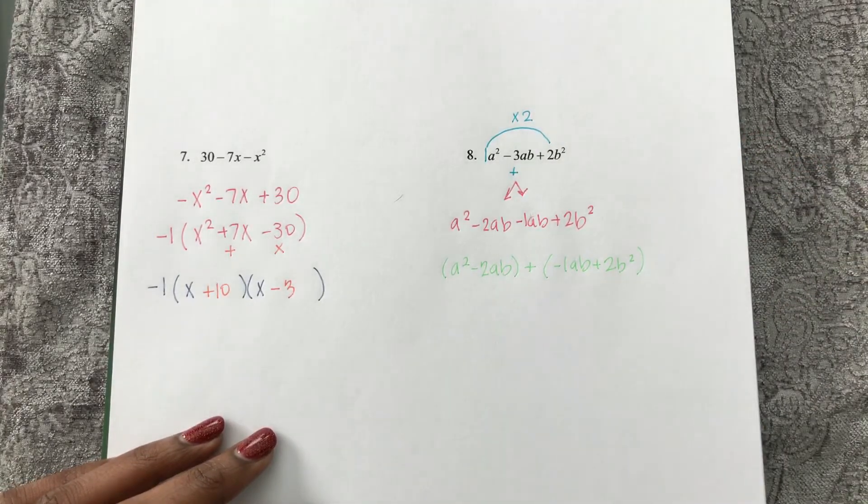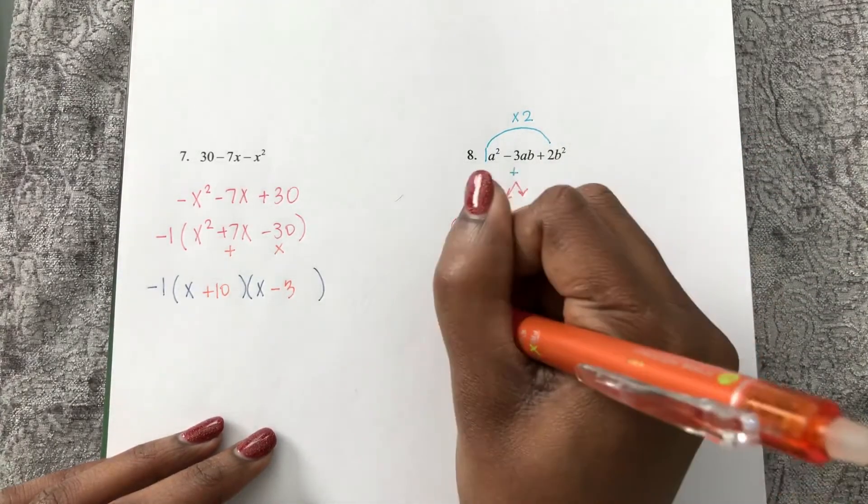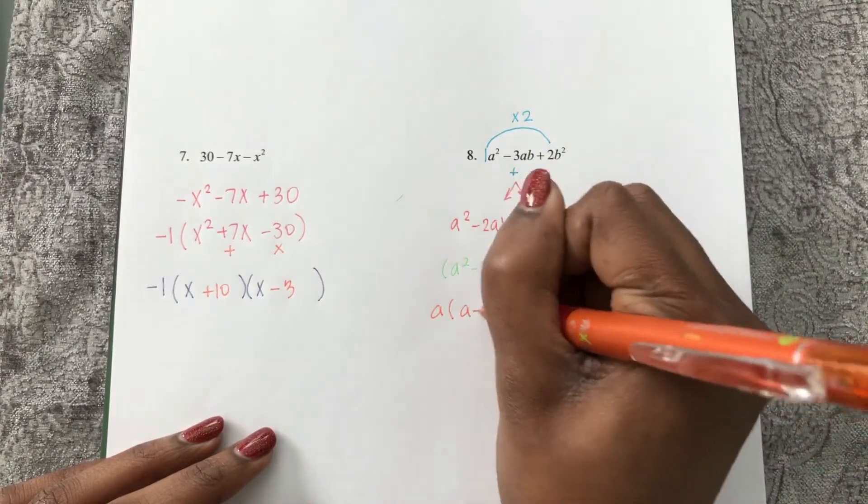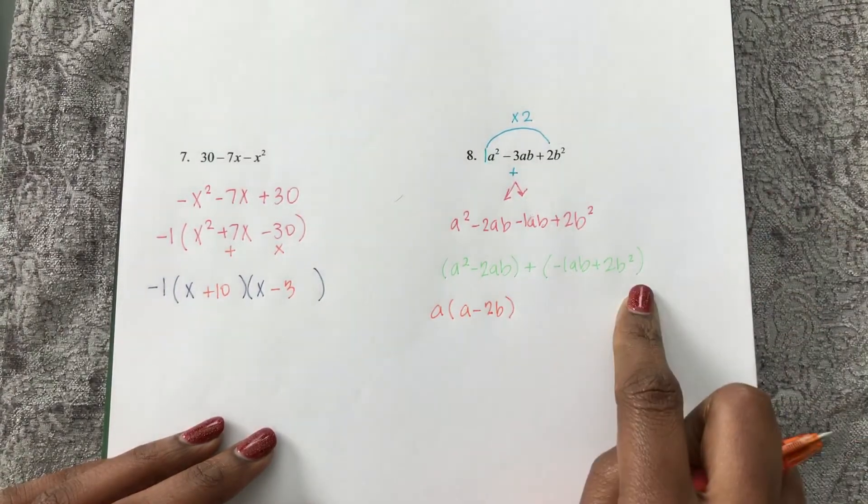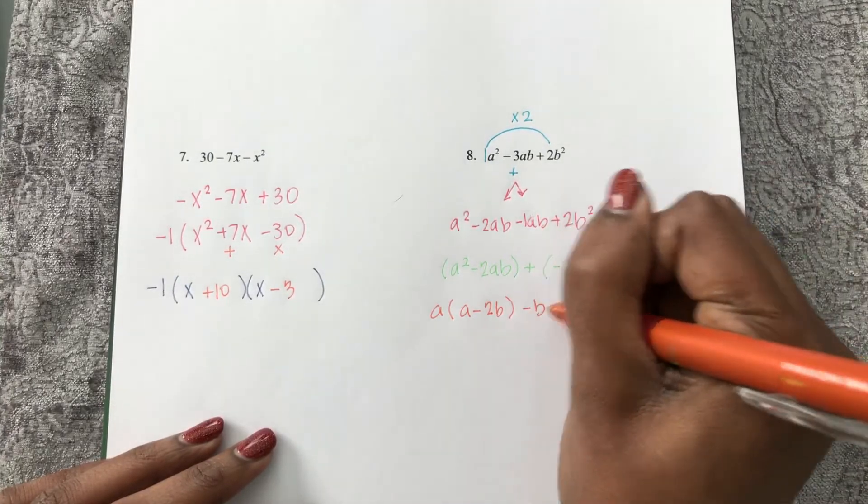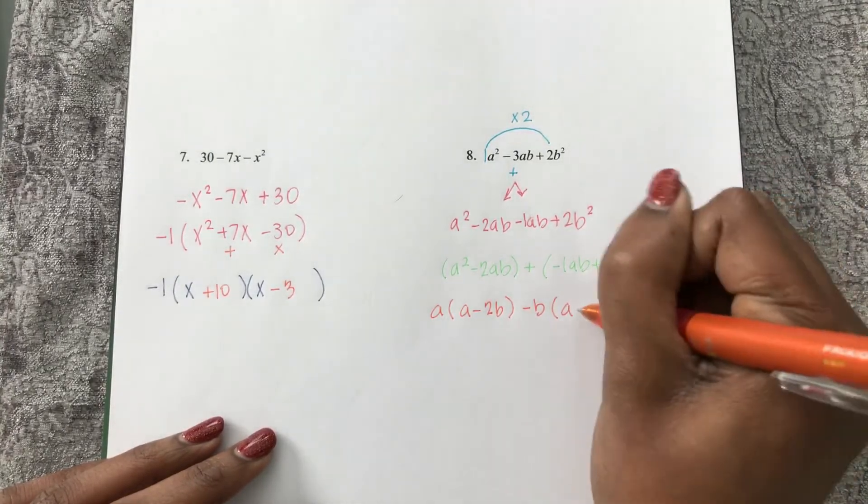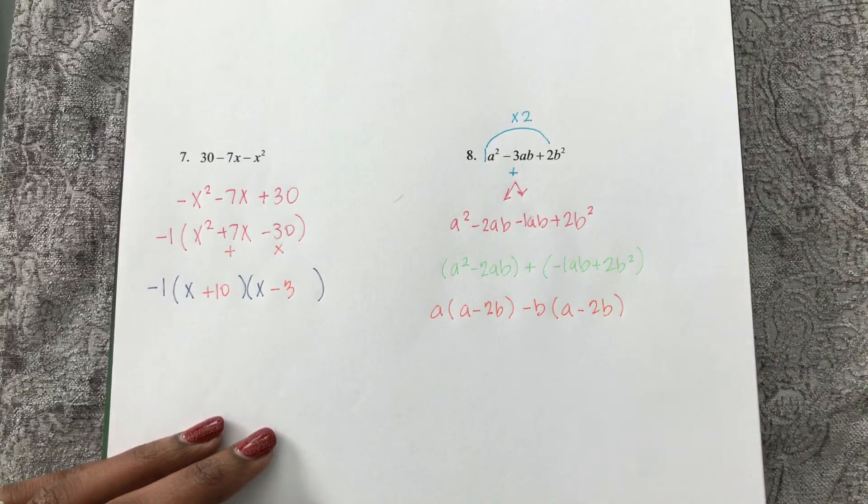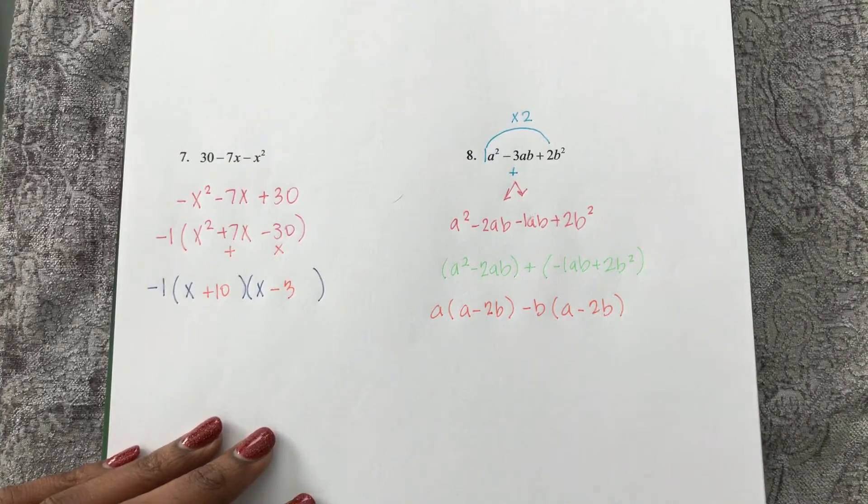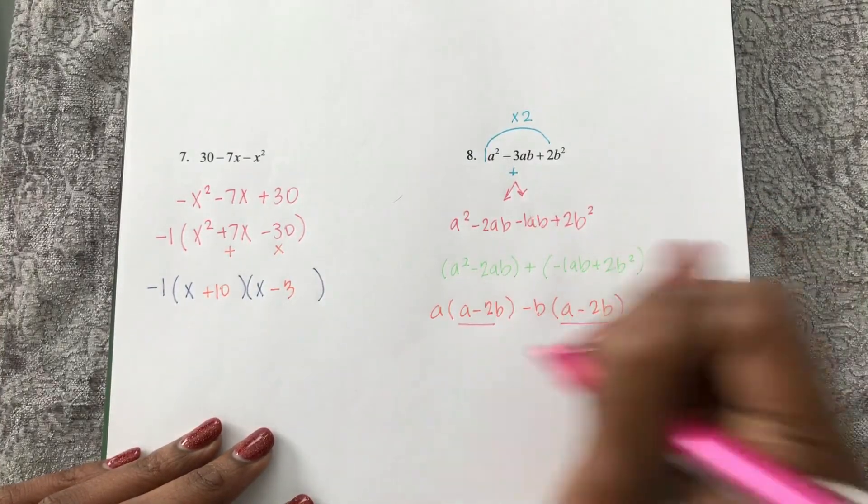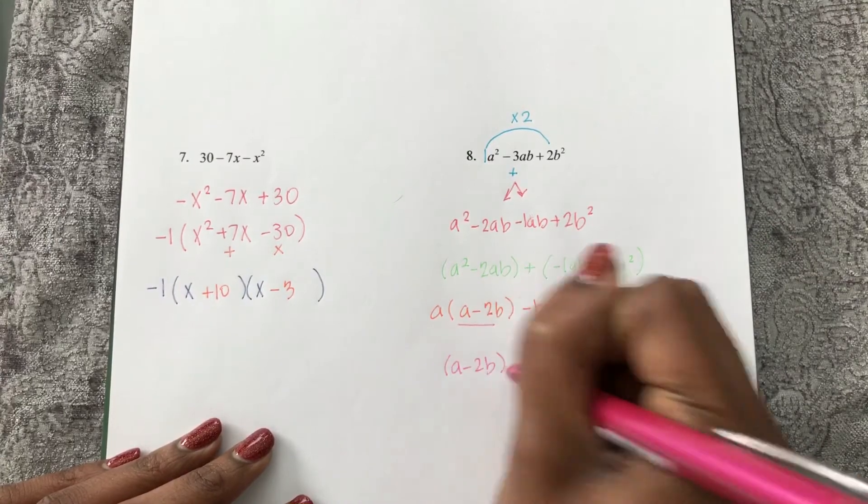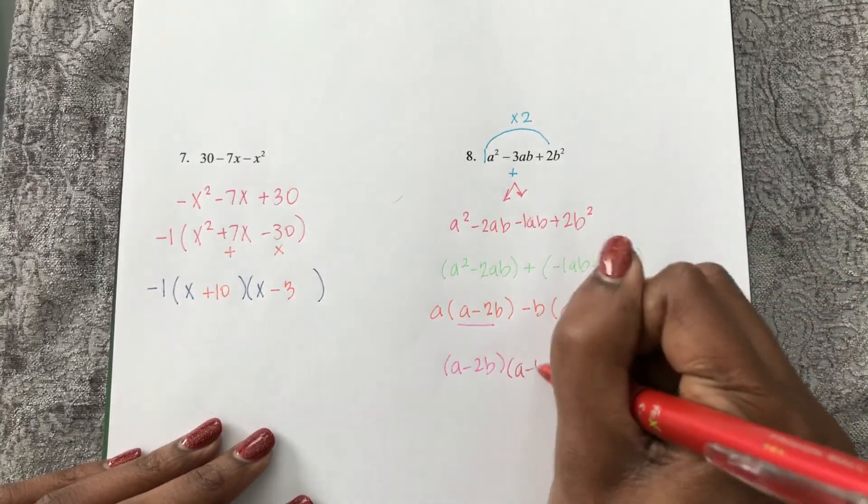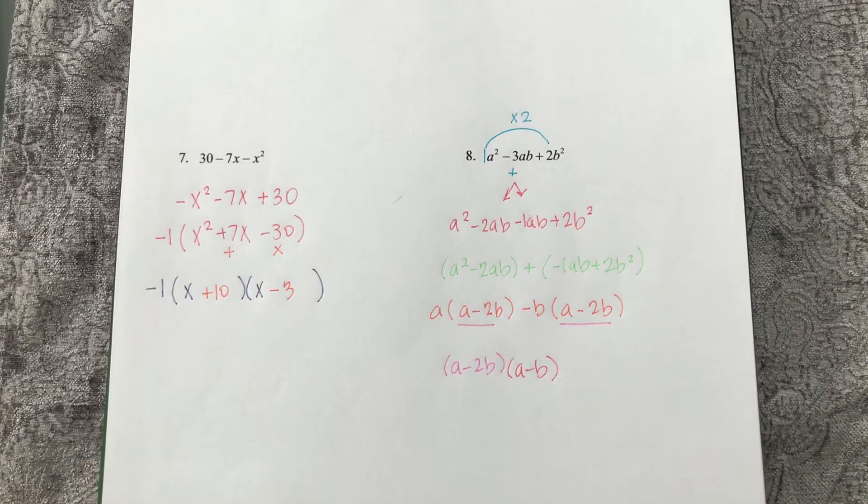So out of my first group, I can factor out an a, and that leaves a minus 2b. Here I can factor out a negative b, and that leaves a minus 2b. My binomial GCF here is a minus 2b, and that leaves a minus b here.